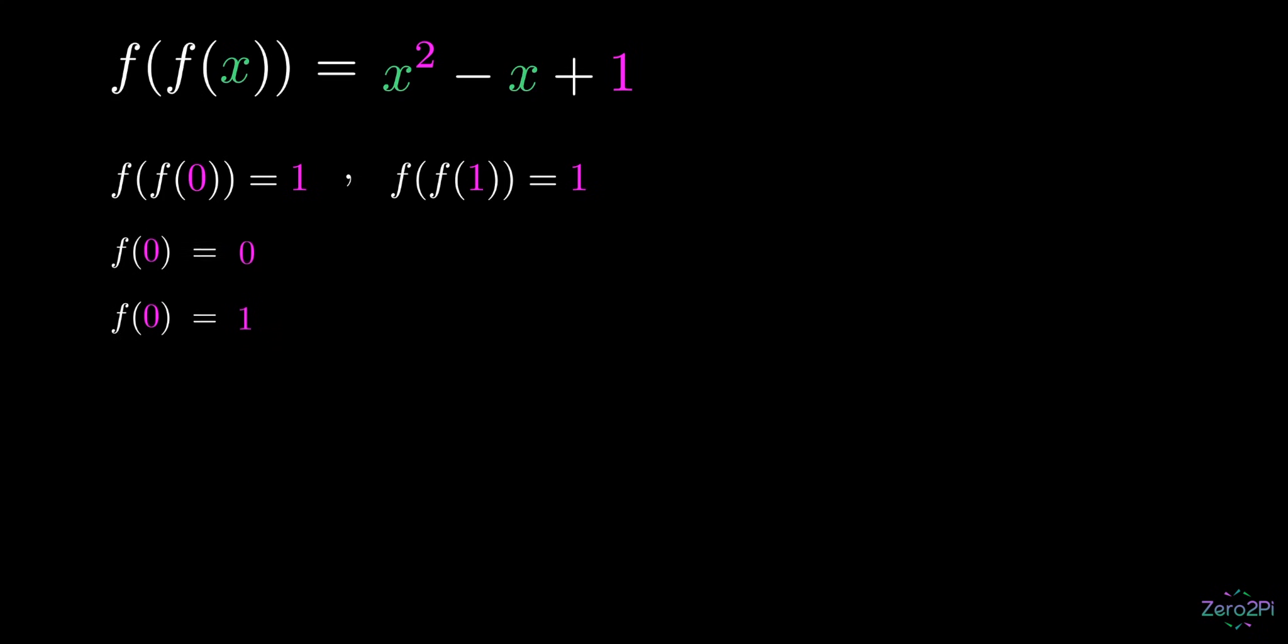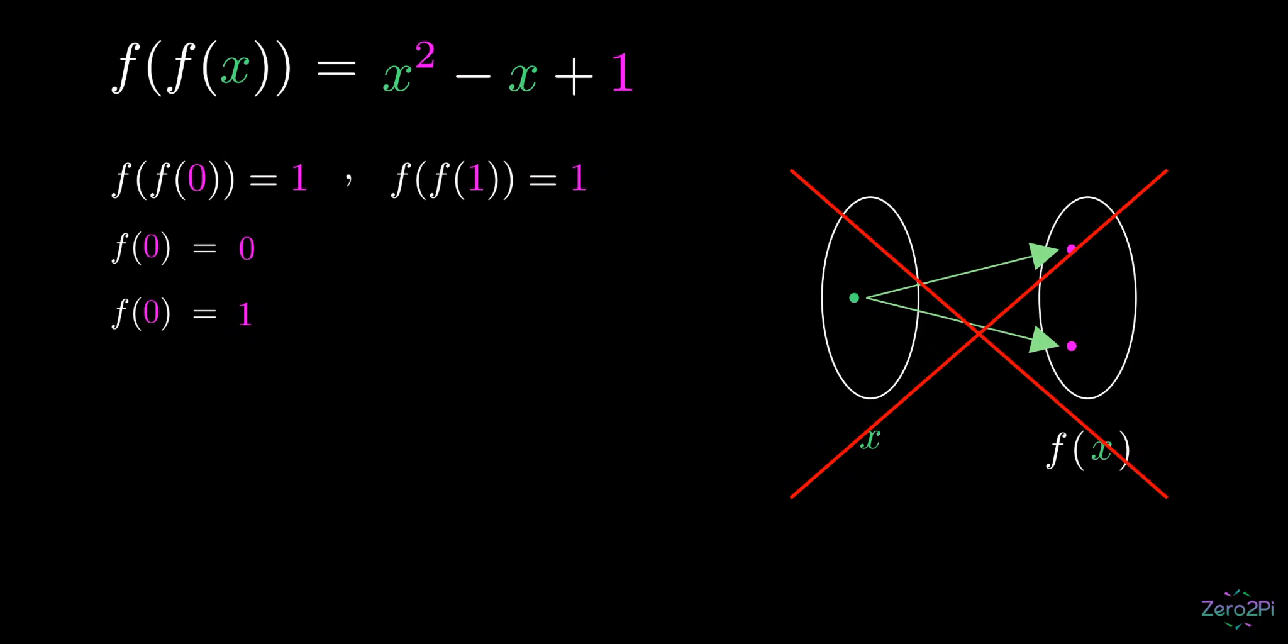Now here comes our bone of contention, and we'll use a visual to understand it. We know that a function must always send one input to one unique output. It cannot split into two arrows, so only one of the two algebraic solutions can actually be valid. So let's check.